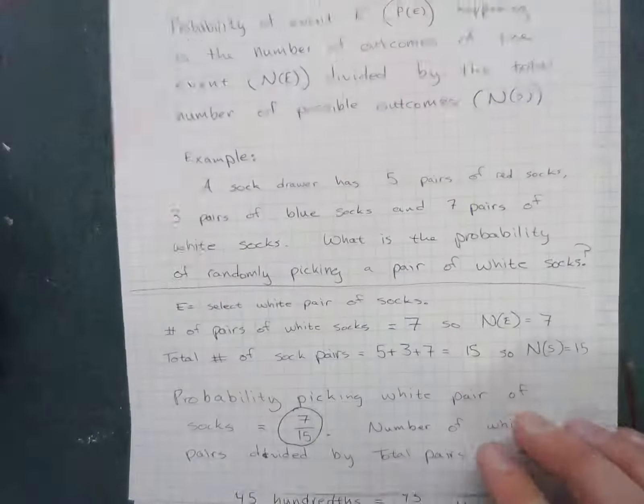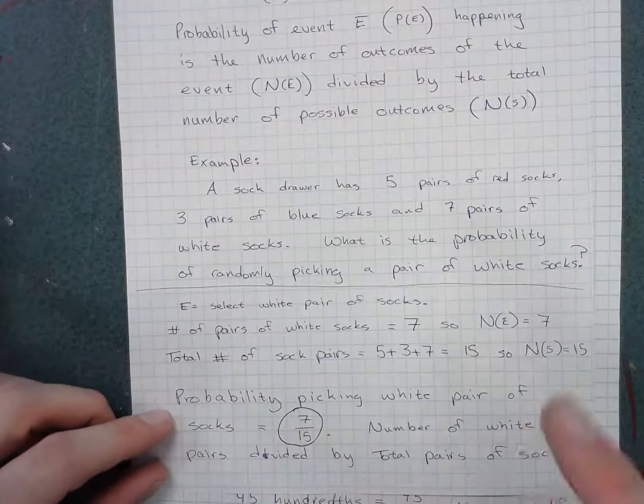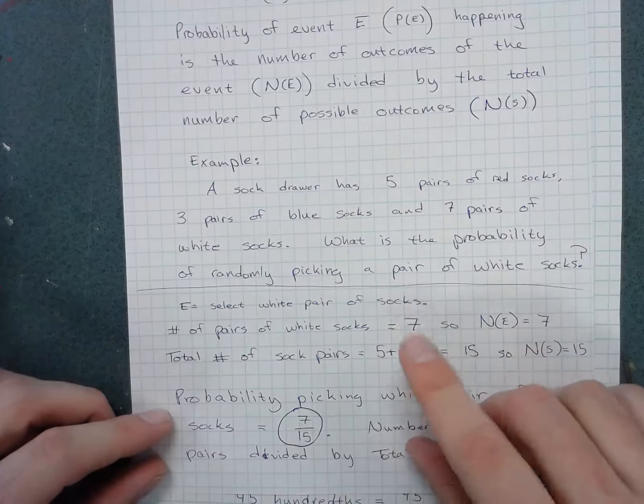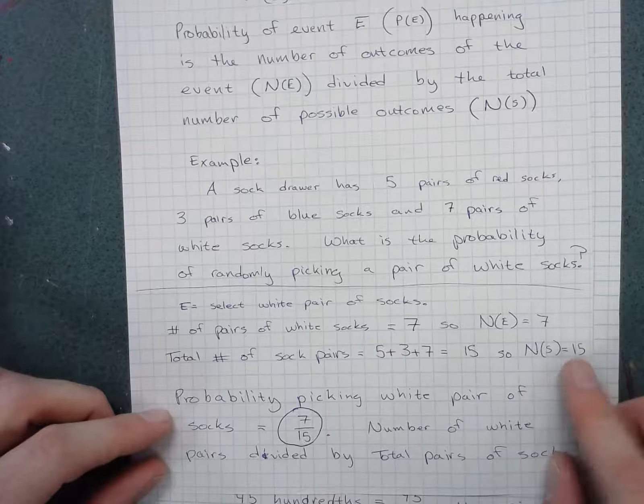The probability of picking a white pair of socks is seven over 15. Seven is the total amount of pairs of white socks. Fifteen is the total amount of socks in the drawer altogether.